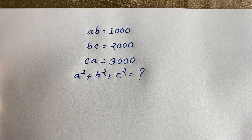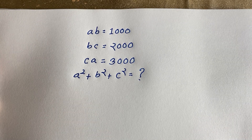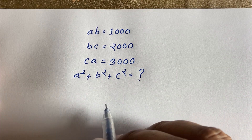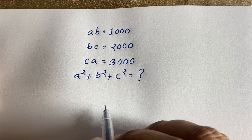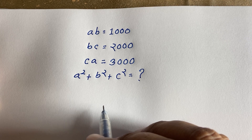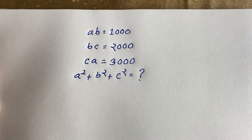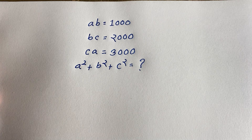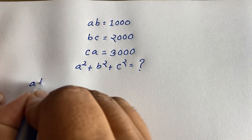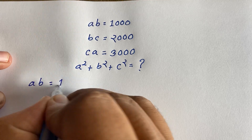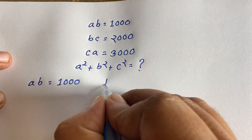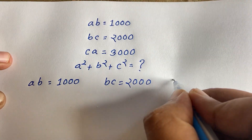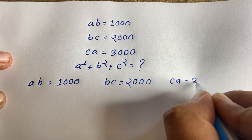Hello everyone. In this video we solve an interesting Math Olympiad question. We are given: a·v = 1000, v·c = 2000, and c·a = 3000. Our target is to find a² + v² + c². So our first equation is a·v = 1000, second equation is b·c = 2000, and here c·a = 3000.